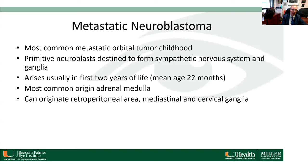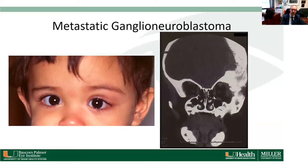Metastatic neuroblastoma is a less common but important tumor seen in ophthalmology. It is a metastatic tumor from another area. These patients usually present early in life — within the first two years. The most common origin is the adrenal gland, and tumors can also originate in the retroperitoneal area, mediastinal, and cervical ganglia. These patients often have a bilateral presentation.